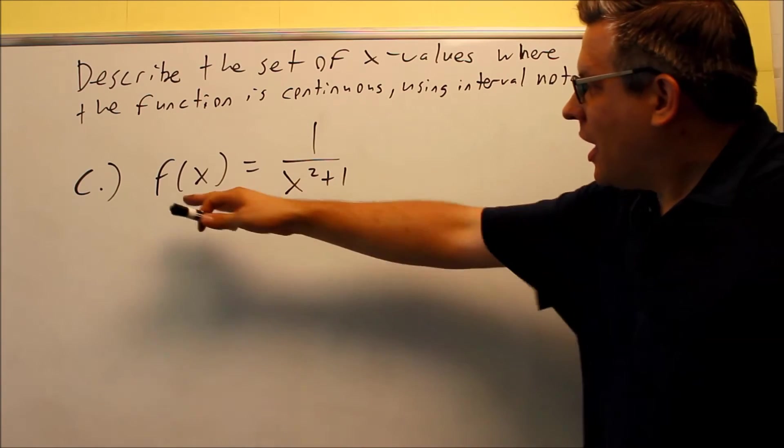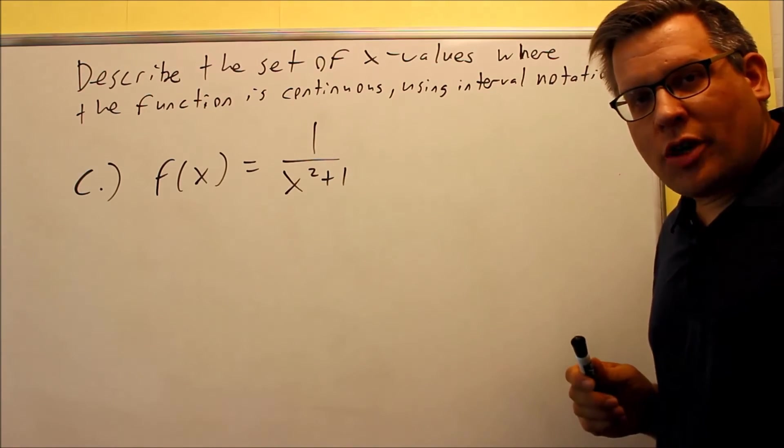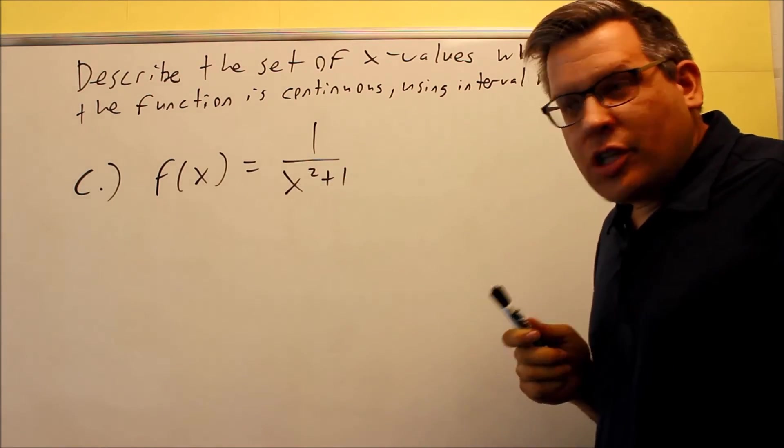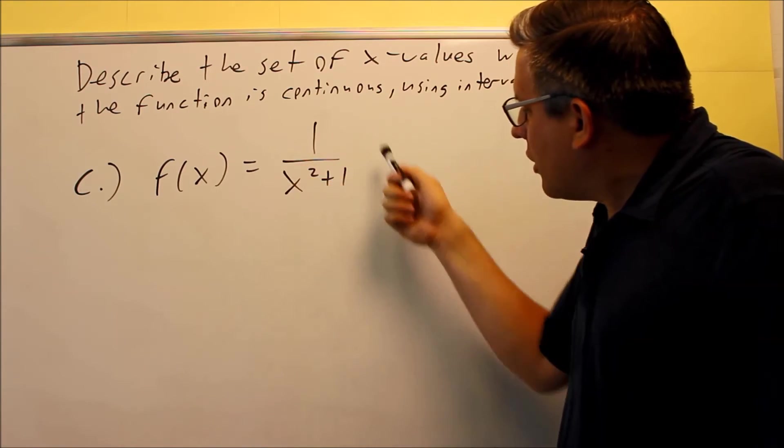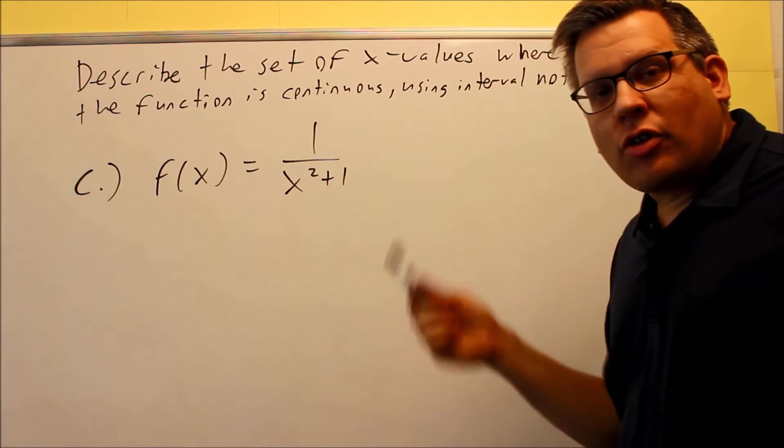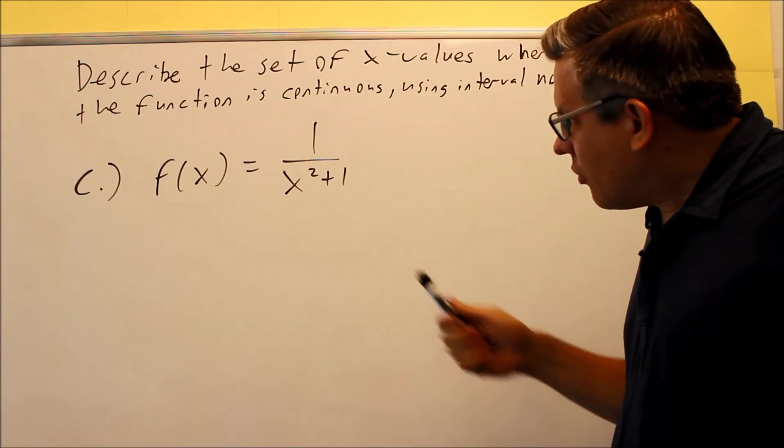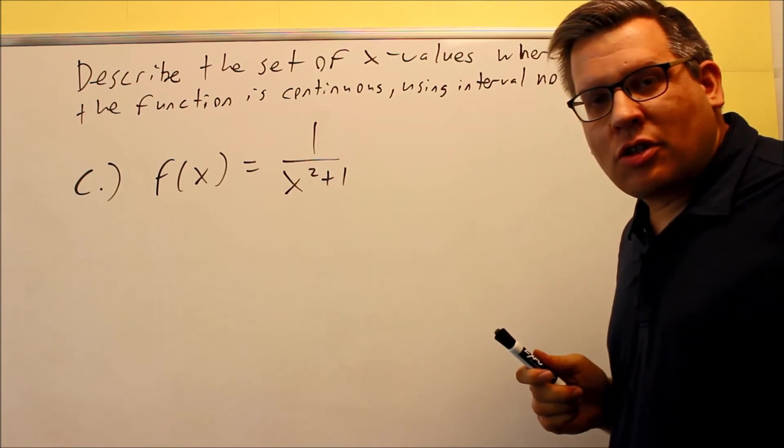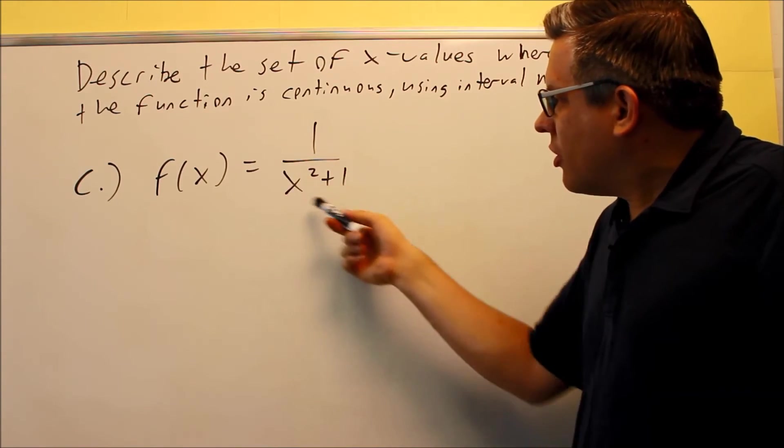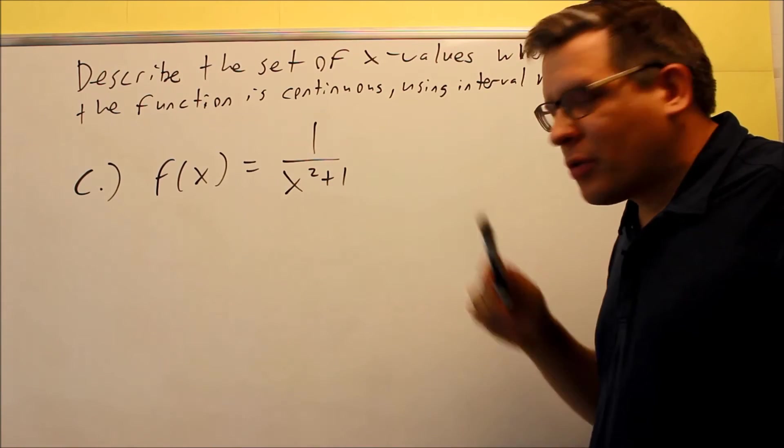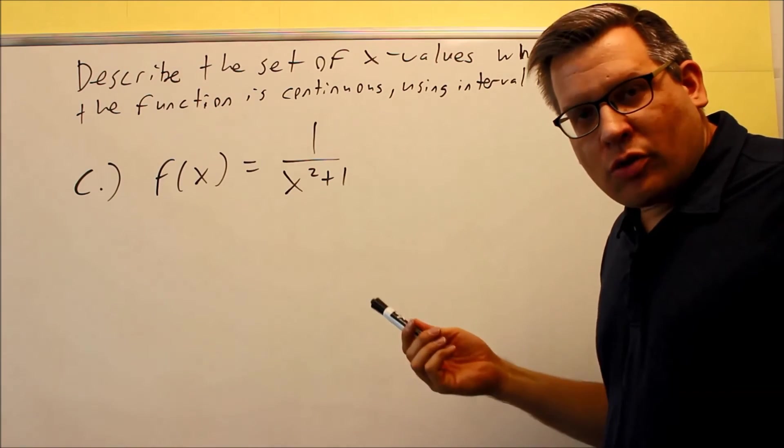Part c, f of x is 1 over x squared plus 1. Now, when you have a fraction, you want to look to make sure that you can't divide by zero. If you can divide by zero, that means that's a place where it's not going to be continuous. So you want to consider, is it ever possible that x squared plus 1 can be equal to zero?